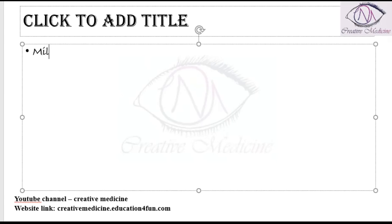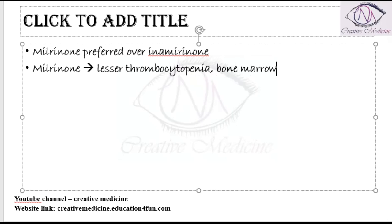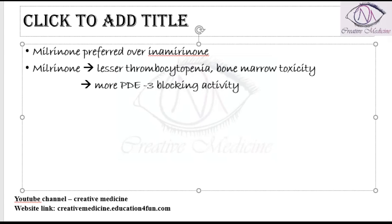Milrinone is preferred over inamrinone because it results in lesser side effects — there is a lesser incidence of thrombocytopenia and lesser incidence of bone marrow toxicity. Milrinone also has greater phosphodiesterase 3 blocking activity than inamrinone.